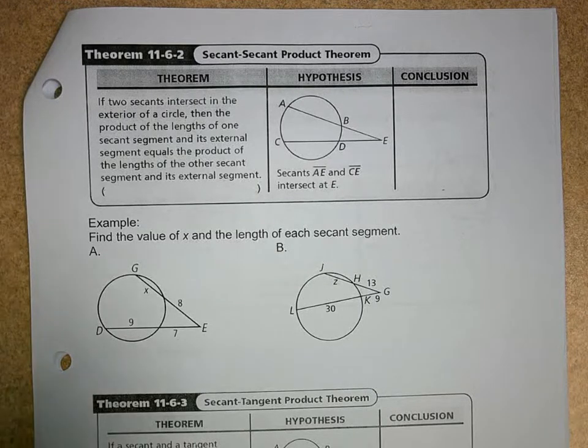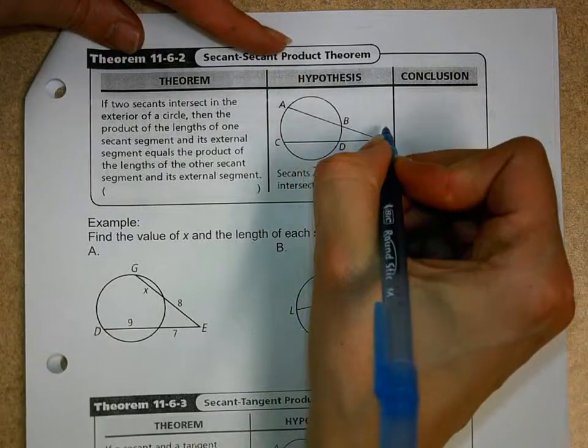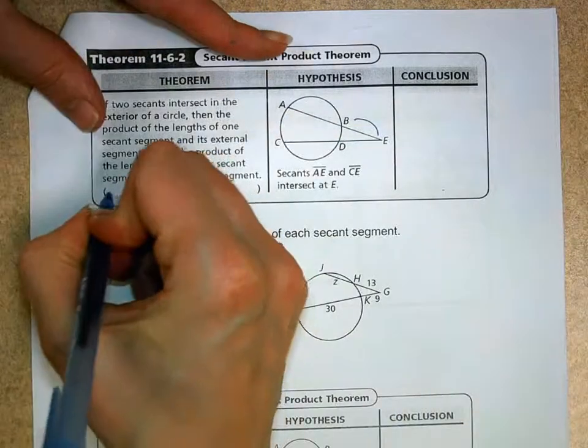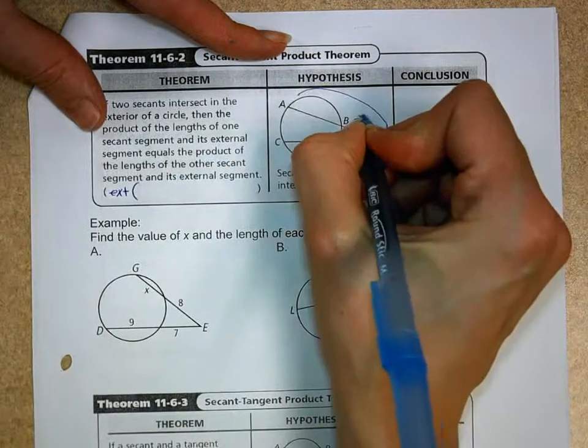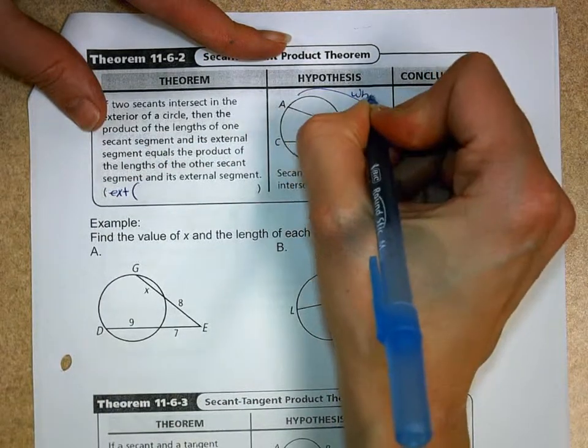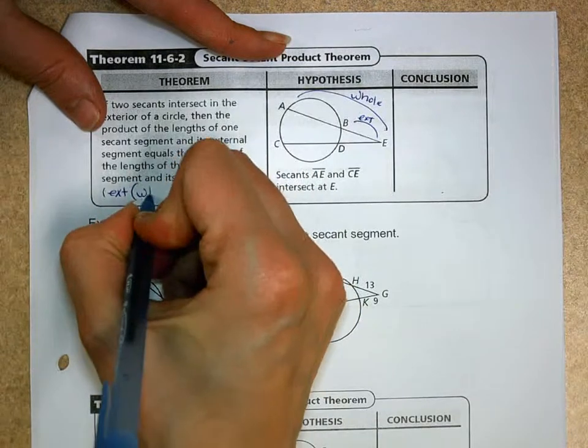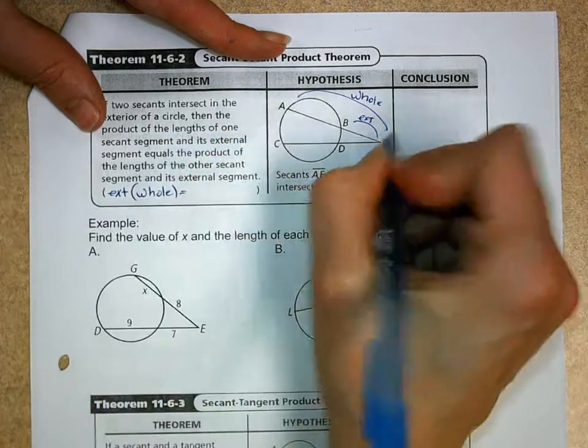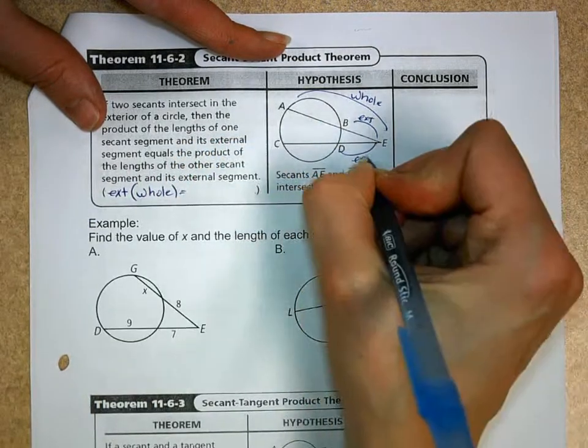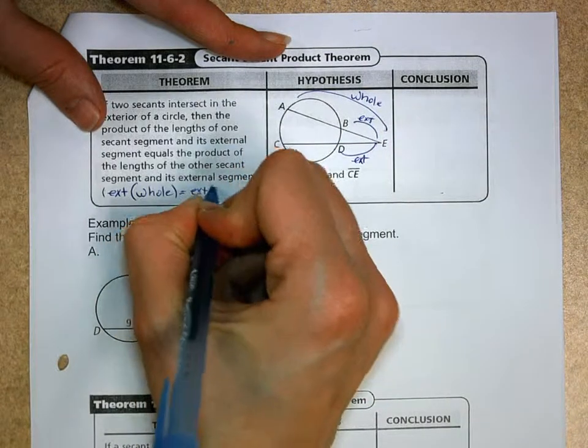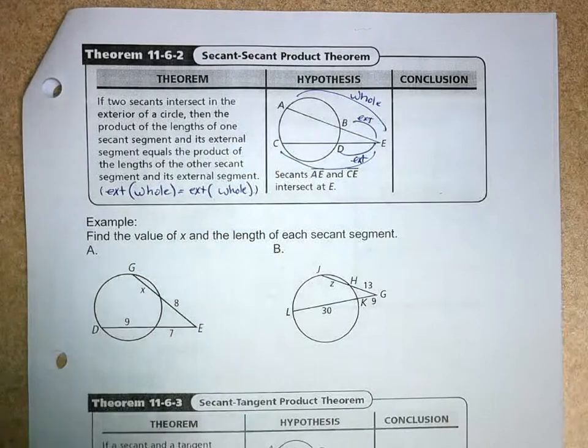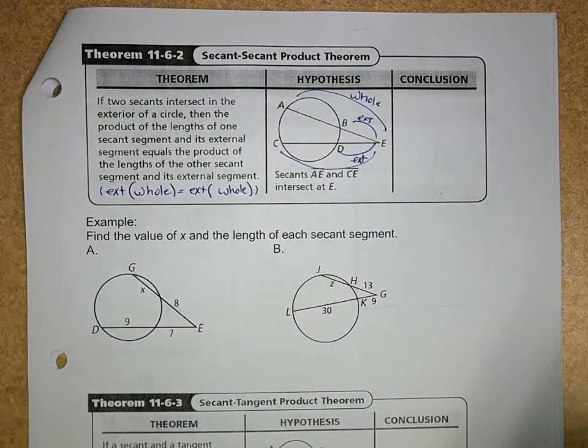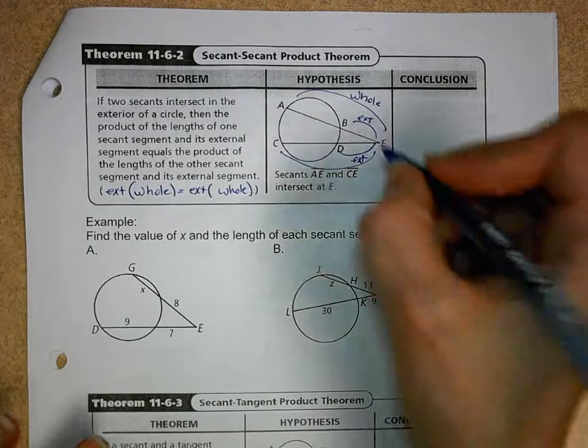Like, what in the world is this saying? So what this is saying is that I'm taking my exterior segment, so the exterior, times the length of the whole thing. So we have the exterior times the whole equals the exterior segment on the other one, so we get the exterior again, times the whole other secant. So we call this exterior times the whole equals exterior times the whole.